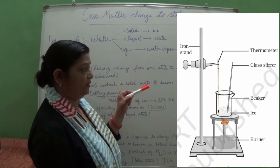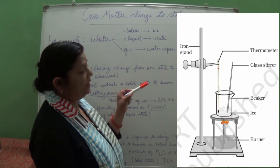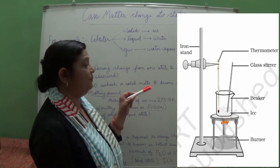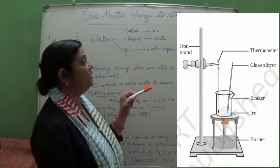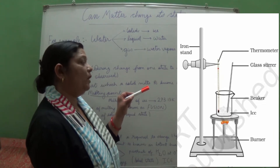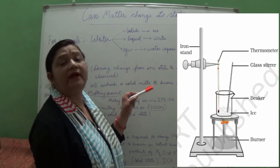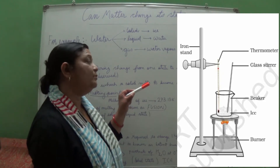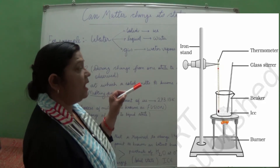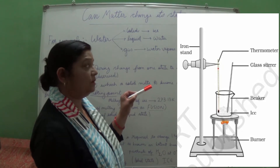We note the temperature first — it is 0 degrees Celsius. After heating starts, we see the ice is forming water, but the temperature on the thermometer is not changing. Why does this happen? Even though we are providing heat, the temperature should change, but it is not changing.